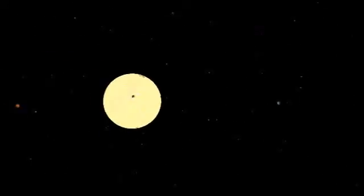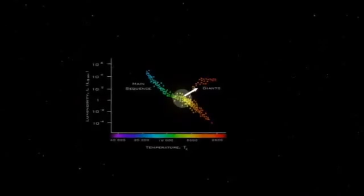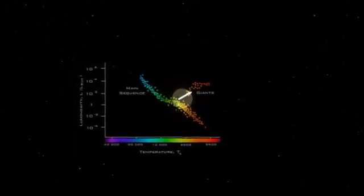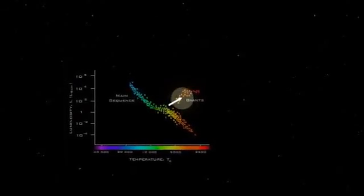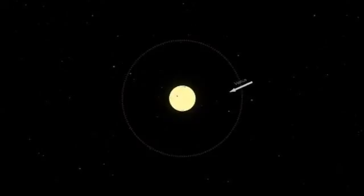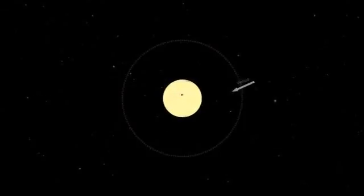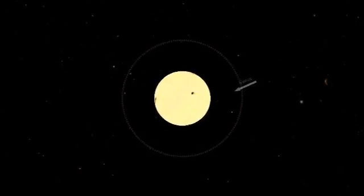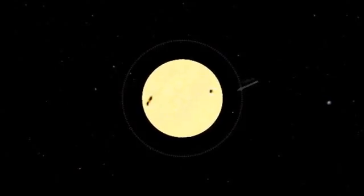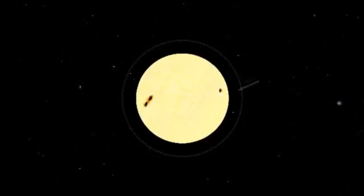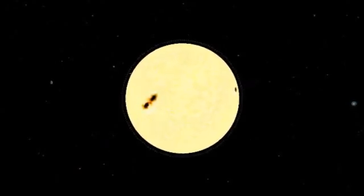Five billion years from now, the Sun's supply of hydrogen will run out. Once the hydrogen in its core is gone, the Sun will leave the main sequence and become a red giant star, its luminosity produced by fusing helium atoms. During this stage, the outer layers of the Sun will expand until it is 200 times its current size, or almost 100 million miles in radius. This new size is larger than the orbits of Mercury and Venus — they will be swallowed by the expanding star. If Earth's orbit increases, it will survive, or it may be swallowed as well.